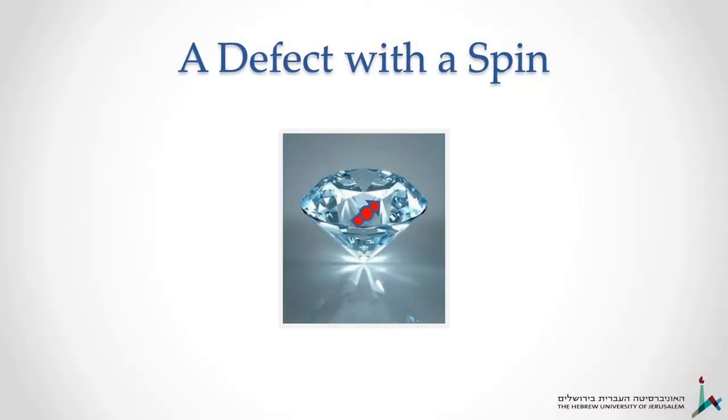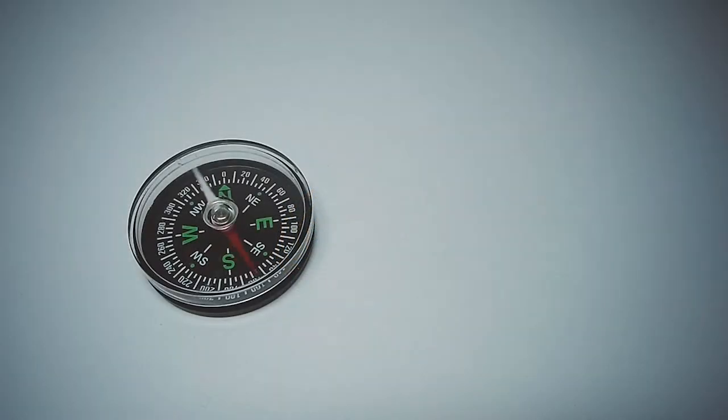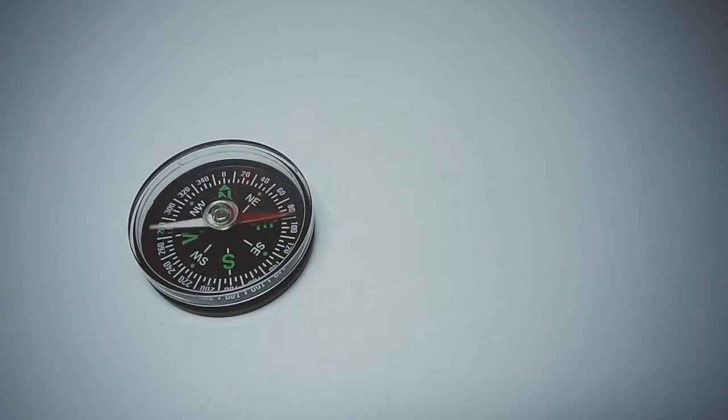What do I mean? First of all, this defect has a property that's called spin. It's essentially a little bit like a magnetic charge, so it feels magnetic fields and reacts to them. You can imagine it as behaving like a compass needle, so it's as if we have a tiny compass needle within our diamond—an atomic-sized compass needle that will turn and react to an external magnetic field.